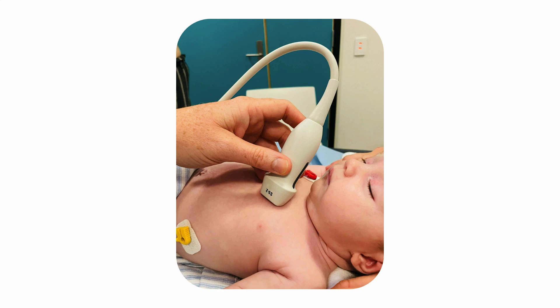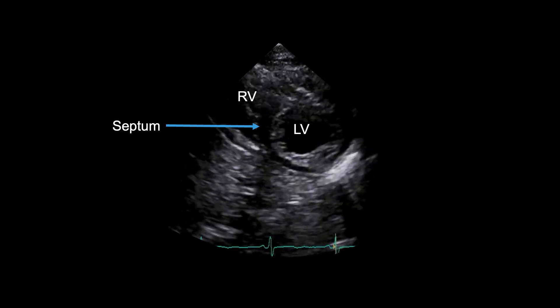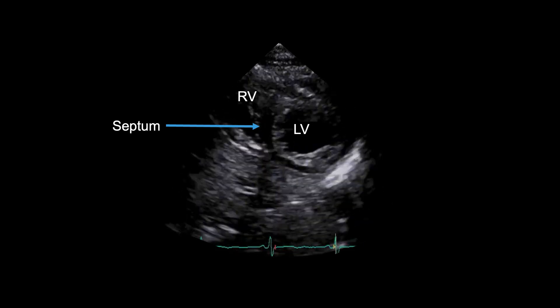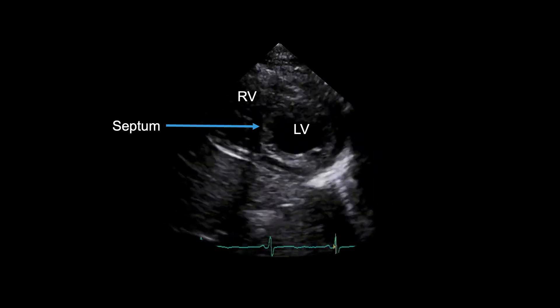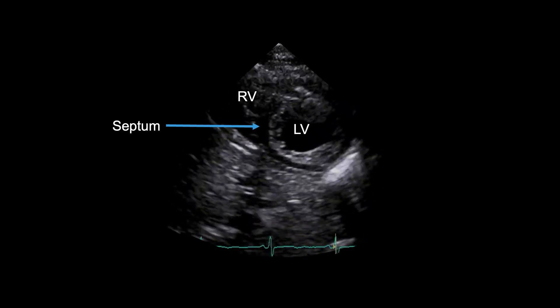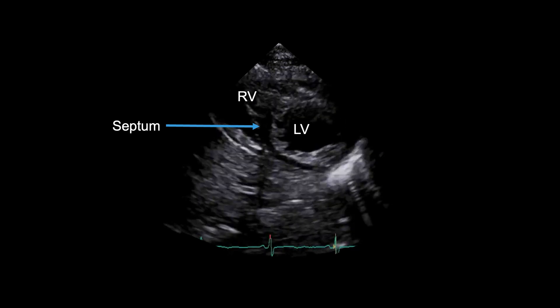Lastly, the third image is acquired with a tilt towards the left ventricular apex. This view assesses apical function and excludes apical muscular ventricular septal defects.